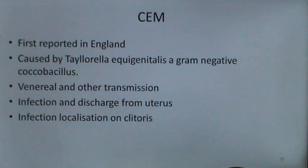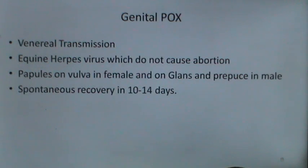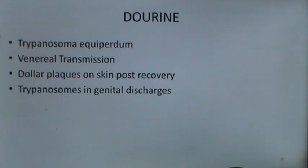Now discussing contagious causes of infertility in the mare: the first is contagious equine metritis, first reported in England. It is caused by Taylorella equigenitalis, a gram-negative coccobacillus. It has both venereal and non-venereal transmission, with infection and discharge from the uterus and localization of infection on the clitoris and genitalia. Genital pox is caused by equine herpes virus and does not cause abortion. It has venereal transmission and causes formation of papules on the vulva in females and on the glans and prepuce in males, with spontaneous recovery in 10 to 14 days. Dourine is caused by Trypanosoma equiperdum with venereal transmission, appearance of dollar plaques on the skin post-recovery, and trypanosomes visible in the genital discharges.